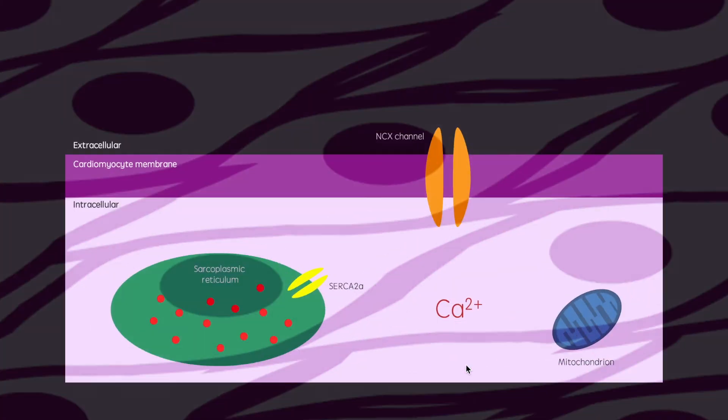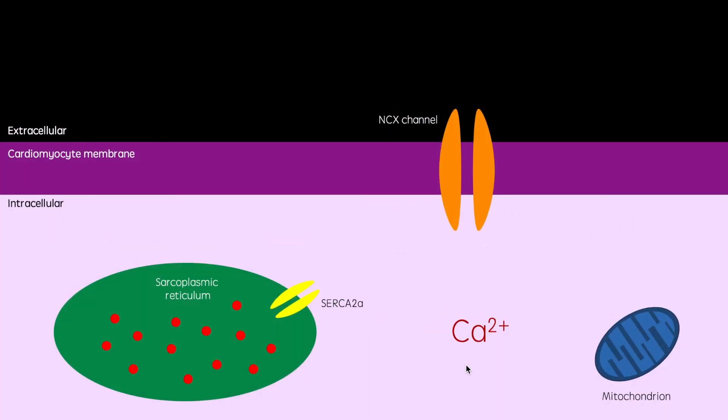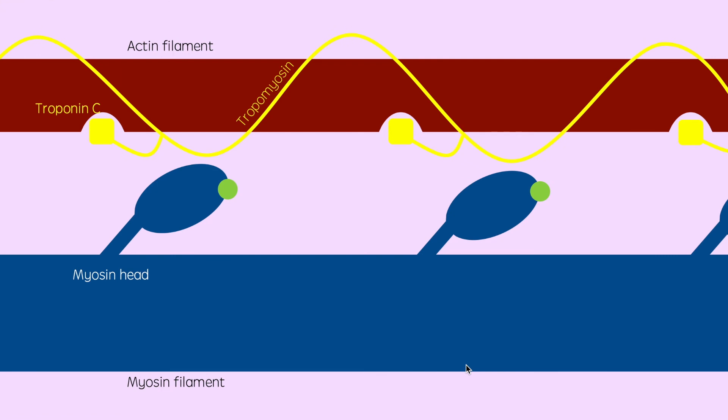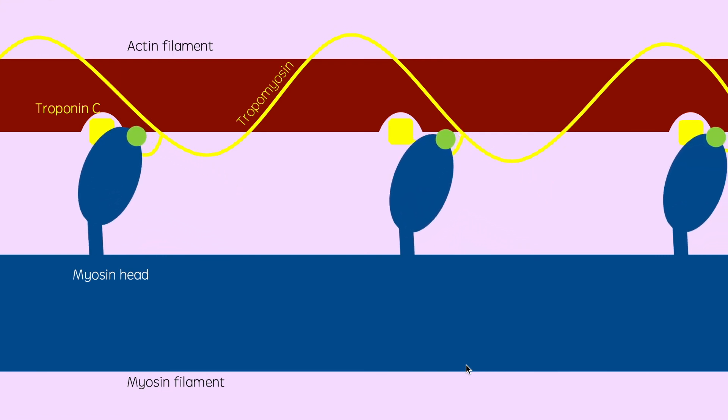However, just as important as excitation-contraction coupling is de-excitation-relaxation coupling. After contraction, calcium is no longer entering the cell as the cell becomes repolarized. The majority of the calcium is transported back into the sarcoplasmic reticulum via SERCA2A channels. Additionally, some calcium is also extruded from the cell in exchange for sodium ions via NCX channels, and some is transported into mitochondria for use in metabolic processes. This means no calcium will be available to pull the tropomyosin away from the myosin binding sites, so contraction will not occur.